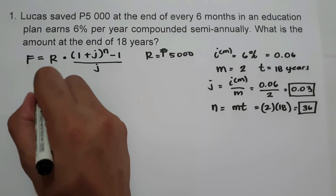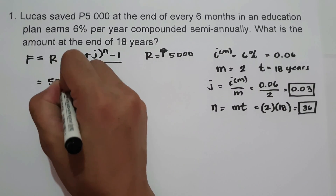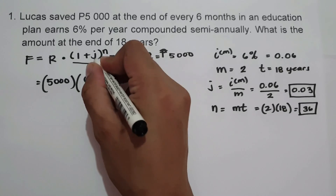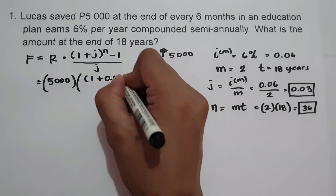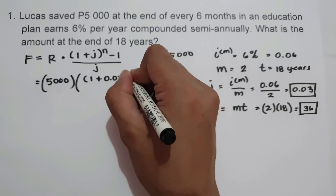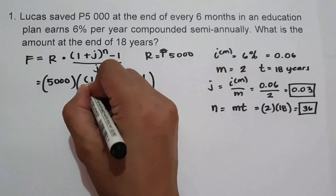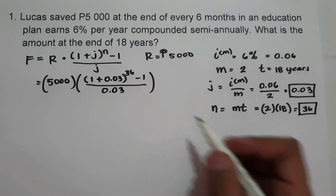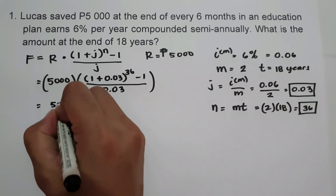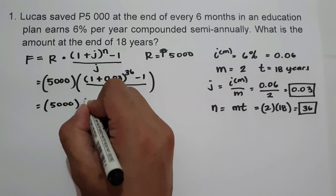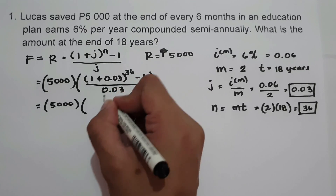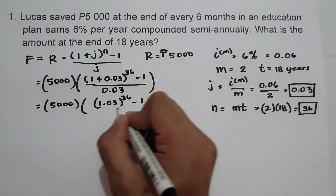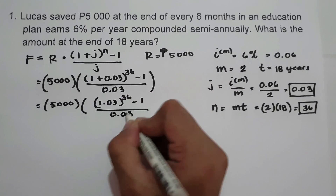Now let us substitute into the formula. The periodic payment R is 5,000 pesos, multiplied by the quantity of 1 plus j (0.03) raised to n (36), minus 1, all over 0.03. Adding inside: 1 plus 0.03 equals 1.03, raised to 36, minus 1, all over 0.03.